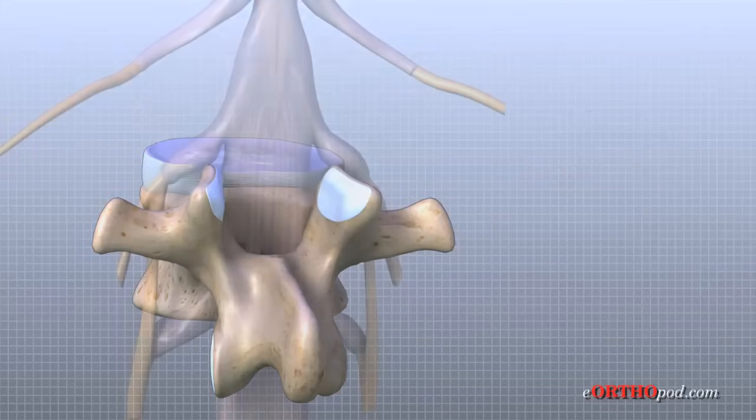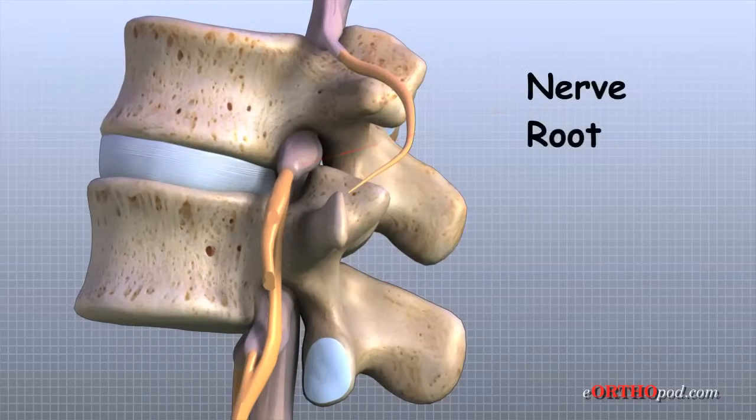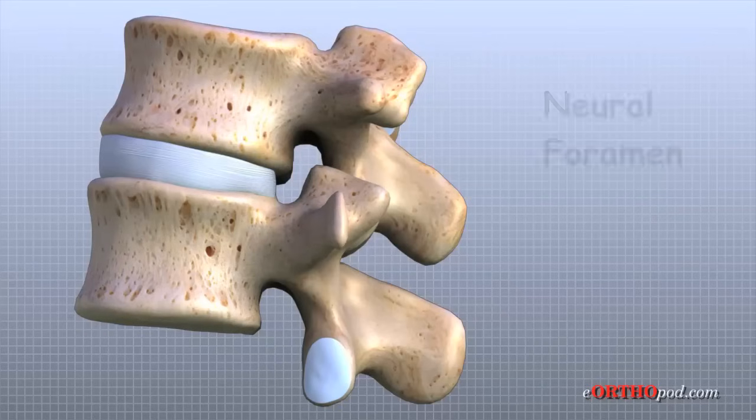Two spinal nerve roots exit the sides of each spinal segment, one on the left and one on the right. As the nerves leave the spinal cord, they pass through a small bony tunnel on each side of the vertebra called a neural foramen.